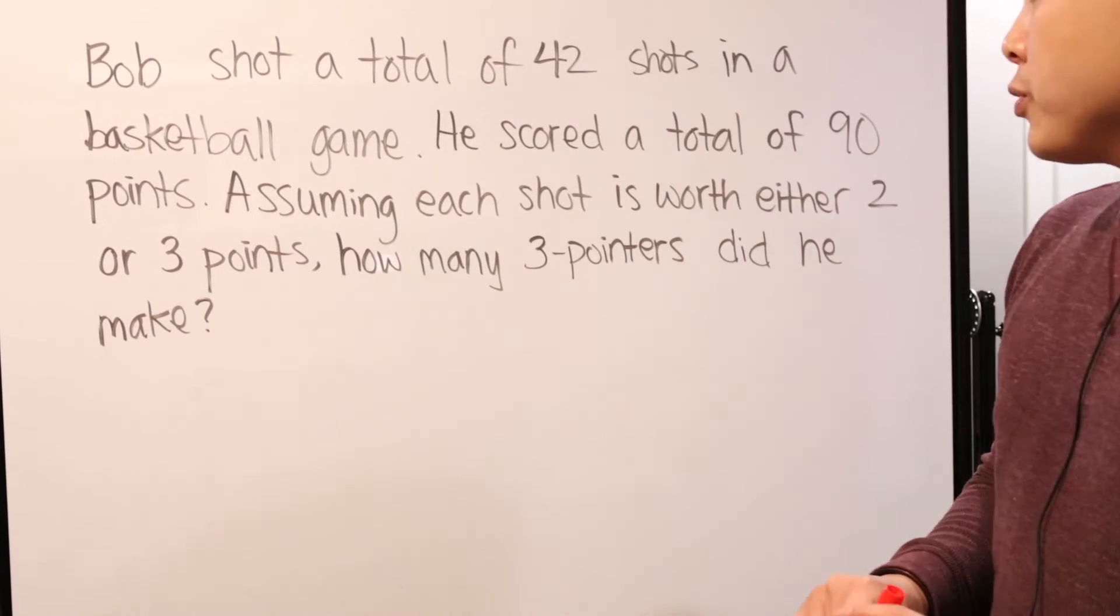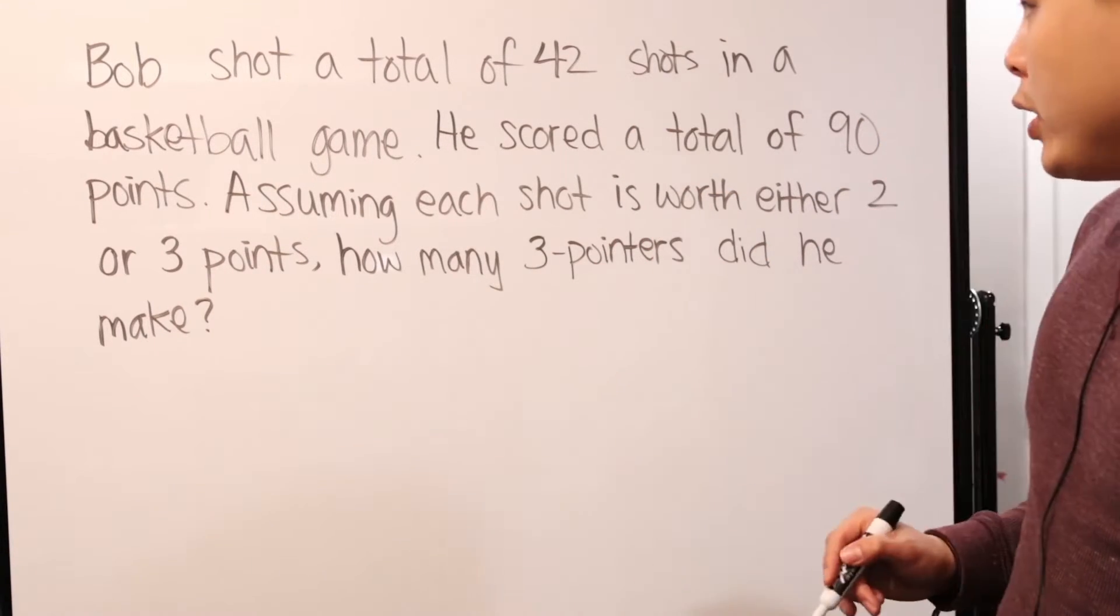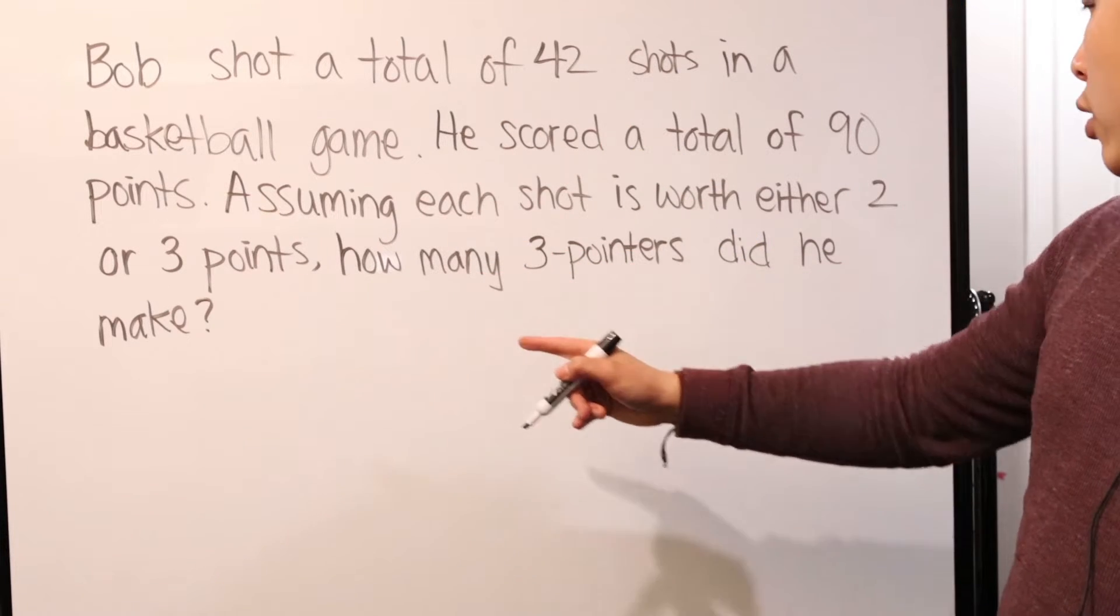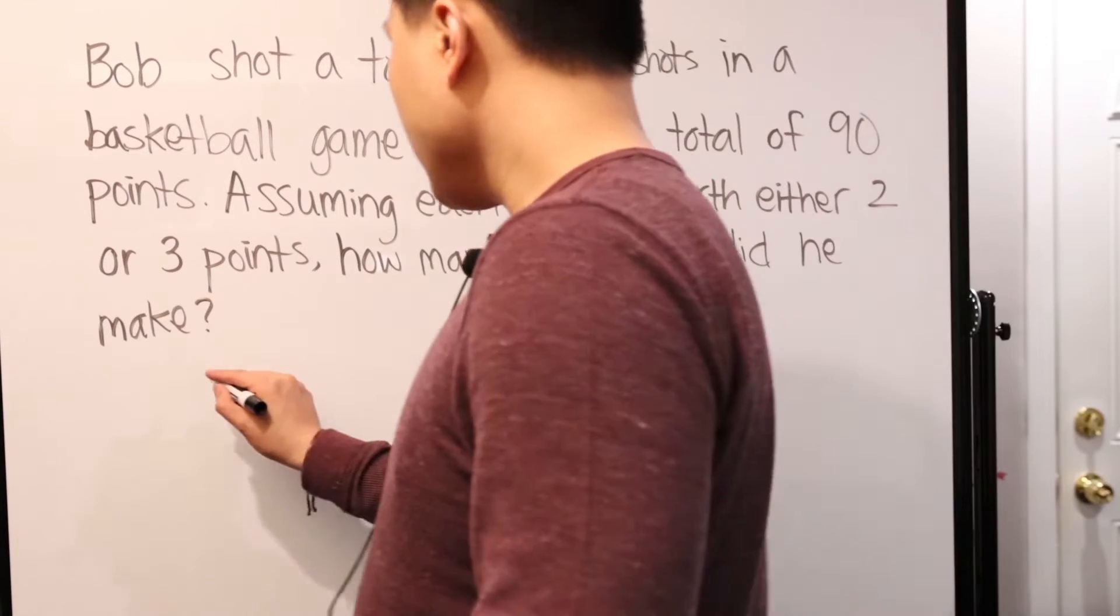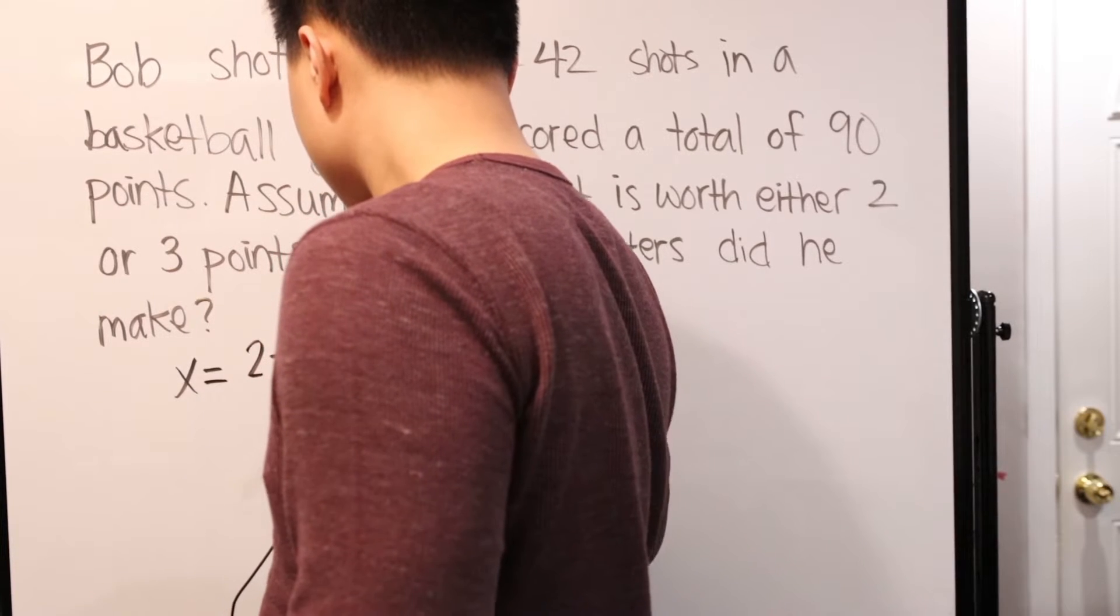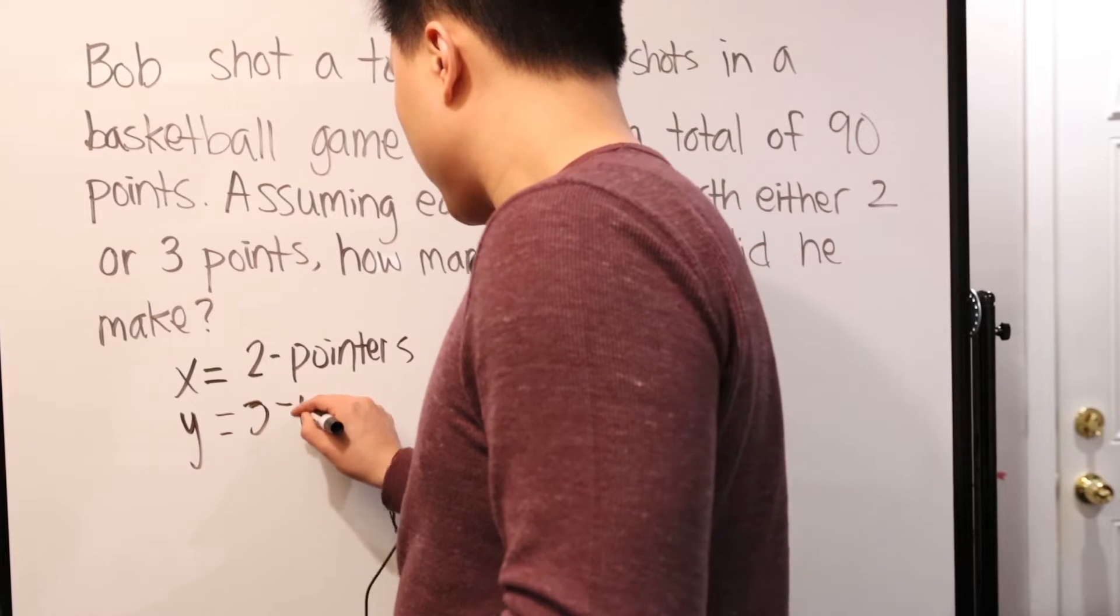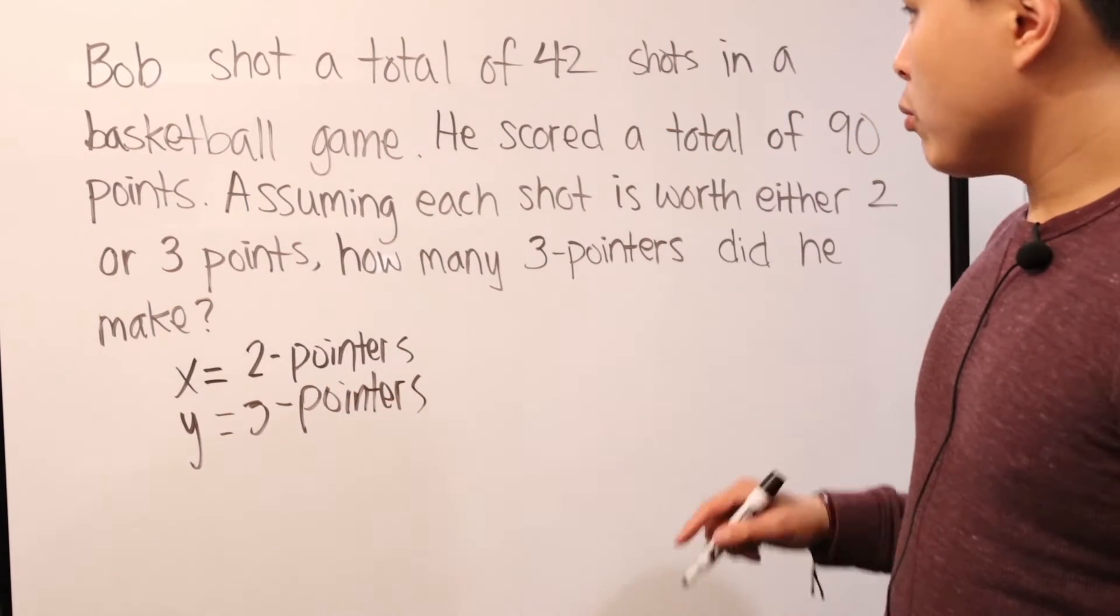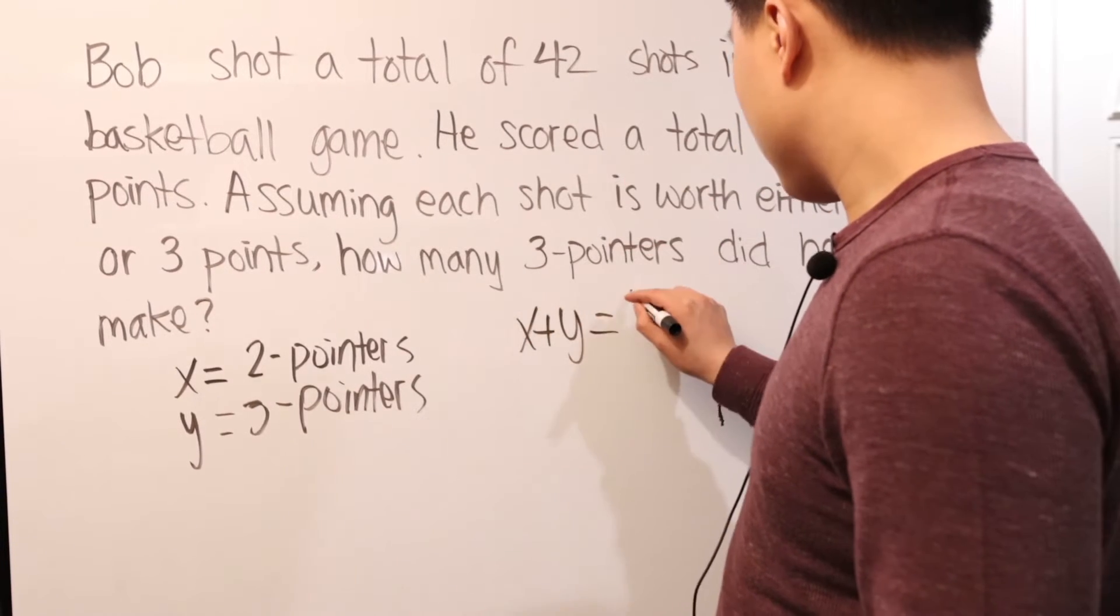Okay. All right. So, what we have to do in this situation normally is we have to find a system of equations. We have, he shot a total of 42 and each of those shots are either two or three points. So, what we can say, X is our two-pointers and Y is our three-pointers. And then after that, we start figuring it out.